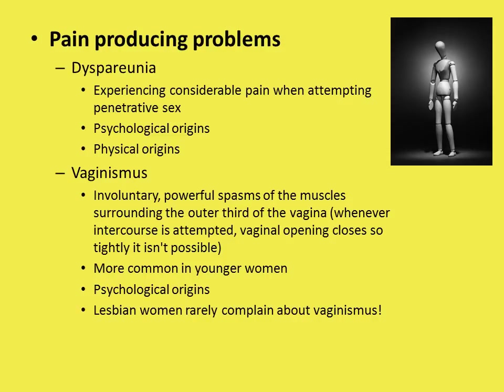Sexual intercourse should not be painful, and there is oftentimes some type of therapy, medication, or treatment that can be recommended. Vaginismus refers to the involuntary spasms of the muscles in the vagina whenever intercourse is attempted, so the vaginal opening actually closes and the woman feels she has no control over it. That's why it's called involuntary.